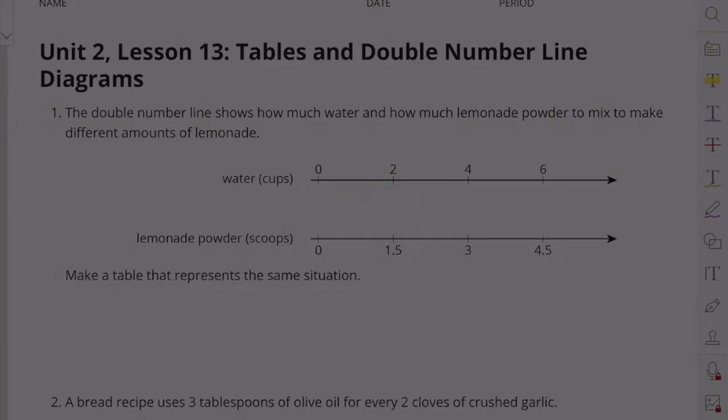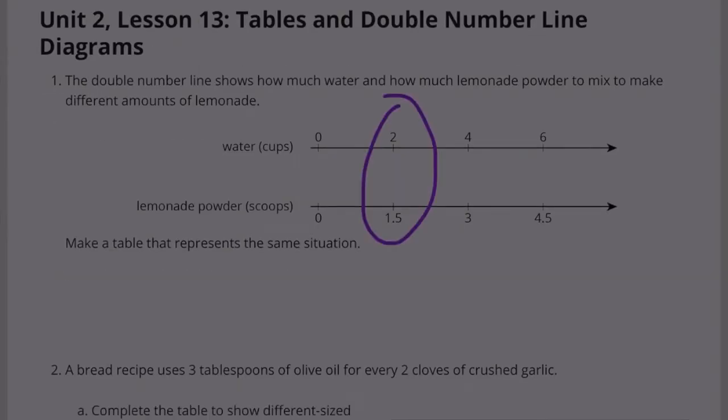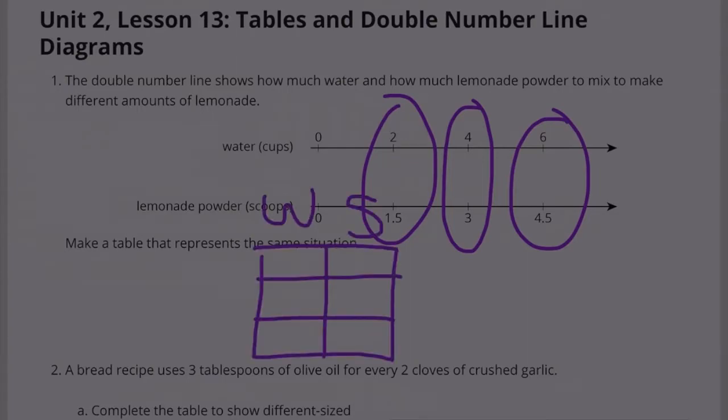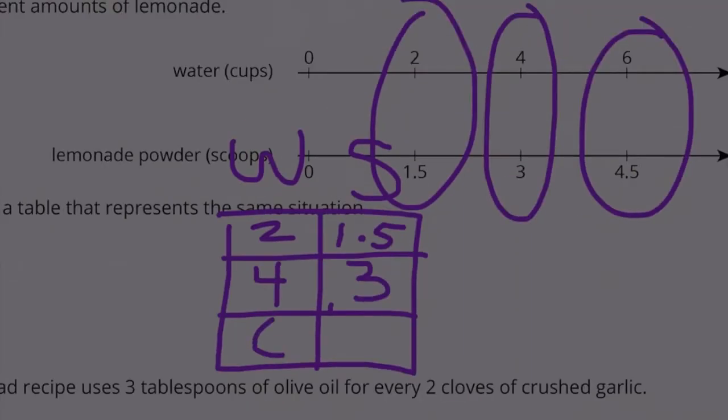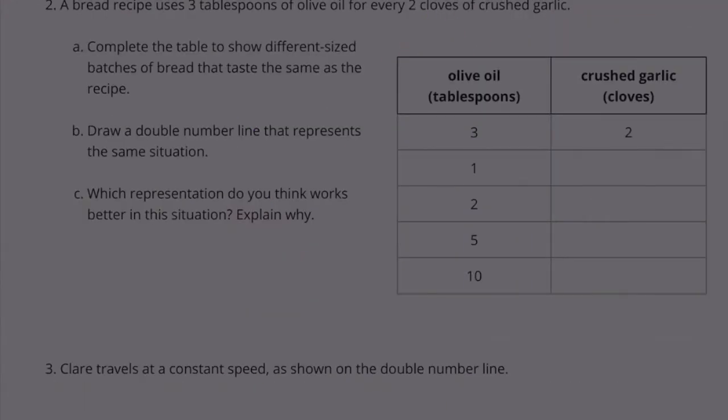Unit 2 Lesson 13: Tables and Double Number Line Diagrams. Number one, the double number line shows how much water and how much lemonade powder to mix to make different amounts of lemonade. Two cups of water to 1.5 scoops of lemonade powder, four cups to three scoops, six cups to 4.5 scoops. Make a table that represents the same situation. The column on the left represents water, the column on the right represents the number of scoops: 2 to 1.5, 4 to 3, 6 to 4.5.